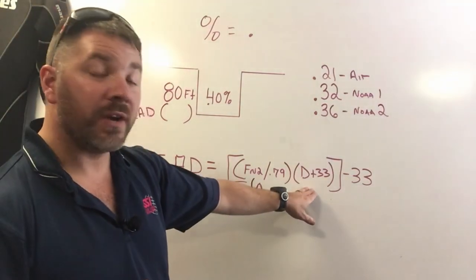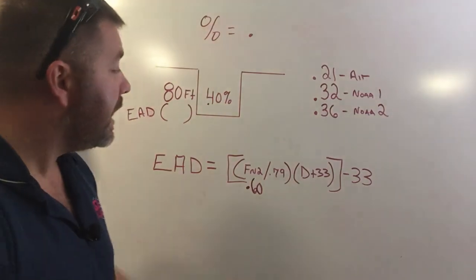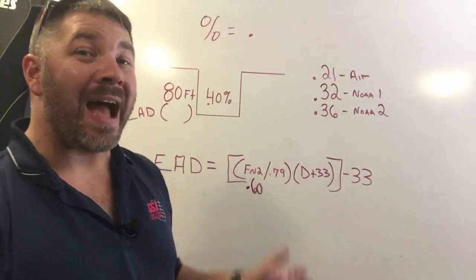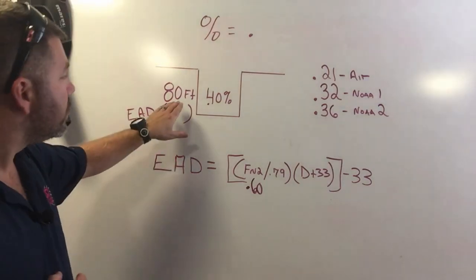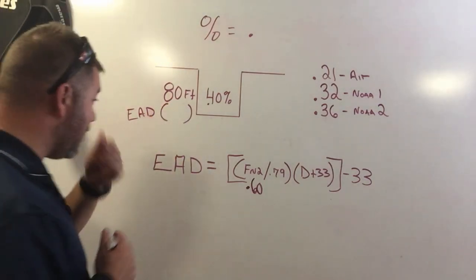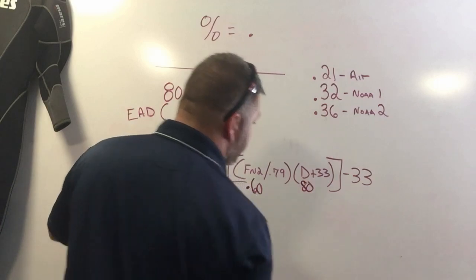You take your fraction of nitrogen and you're going to divide it by normal atmospheric nitrogen which is 79%, and then I'm going to come over here to this part of the equation and I'm going to take depth and add 33 to it, which is normal atmospheric pressure. So 80 feet being my depth, I simply add it to that 33.